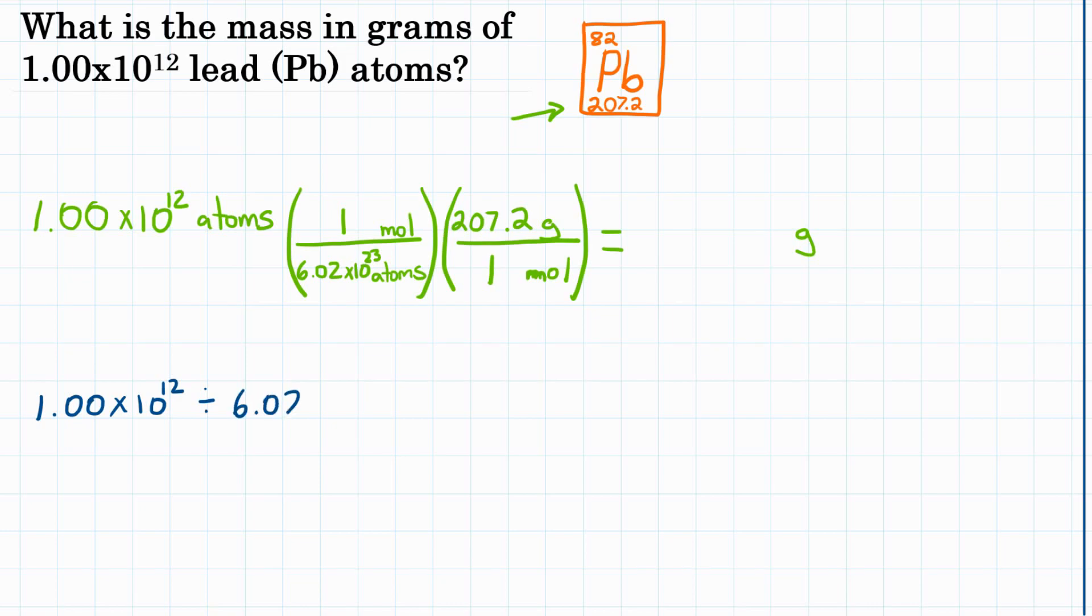which is 6.02 times 10 to the 23rd. Then we're going to multiply by the top of the second fraction, 207.2. We could divide by 1, divide by the bottom, but that's not going to change anything. And when we punch this all in our calculator, we should end up with 3.44 times 10 to the negative 10th grams.